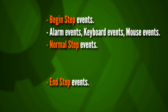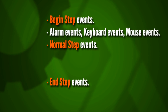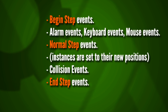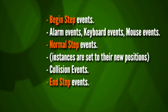After all the alarms, keyboard, and mouse events are processed, that's when the normal step event is processed. So by the time the normal step event occurs, we know that all alarm events have triggered and all keyboard and mouse events have also triggered in all objects in our room. Immediately after the normal step event, instances are set to their new positions — especially if you're using H speed and V speed — and then collision events are checked and processed.